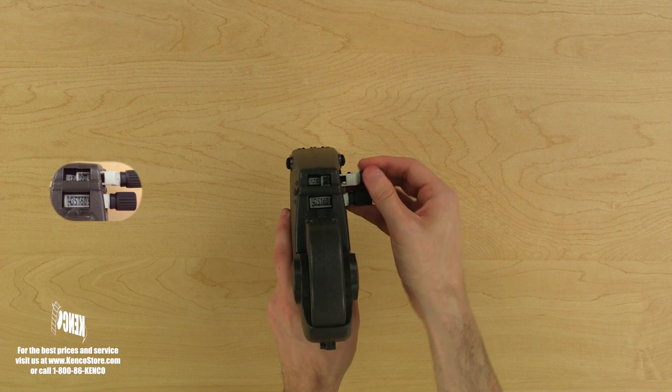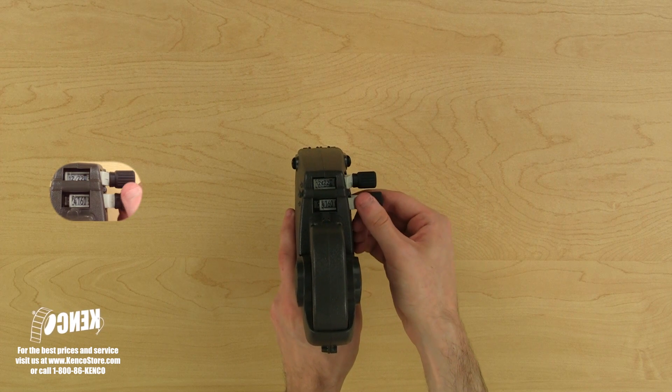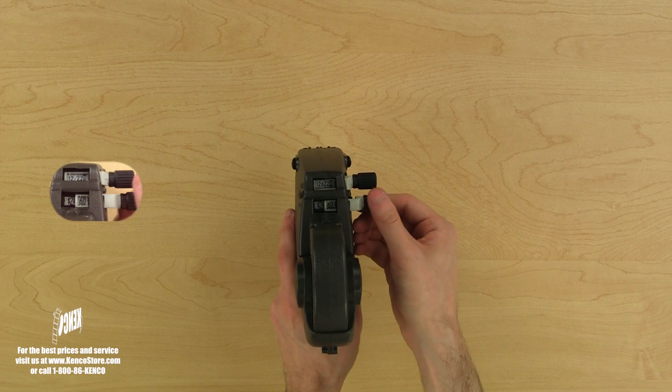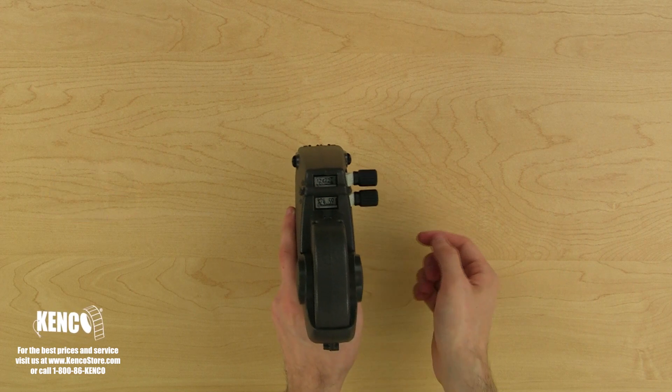When you have finished adjusting the top dial let's make sure to push it back in and we'll move to the bottom adjustment dial. When you have finished adjusting the bottom dial be sure to push the adjustment dial back into the print head and you're all set.